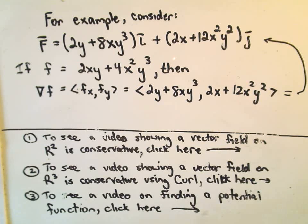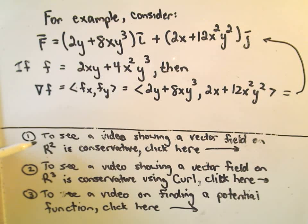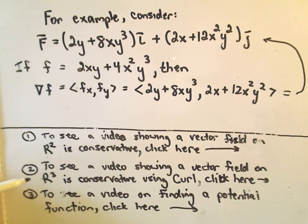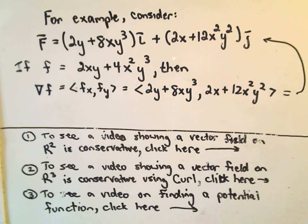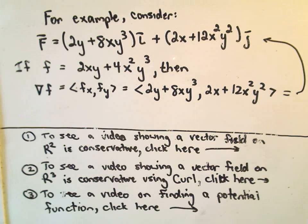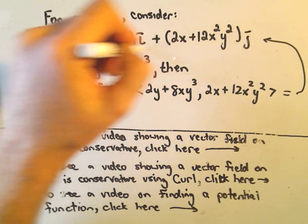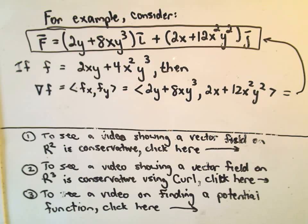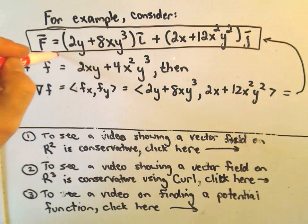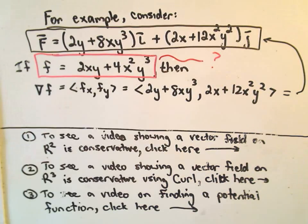So a couple common questions — if you're watching this video you probably want to see one of three things. In another video I'll show that a vector field on R2 is conservative, or show it's not conservative. If you want to see a video showing a vector field on R3 is conservative, it's a little more tedious — we have to use what's called the curl. And assuming a potential function exists and you want to see how to find one, click down here. Finding a potential function is very useful as it ties into the fundamental theorem of line integrals.